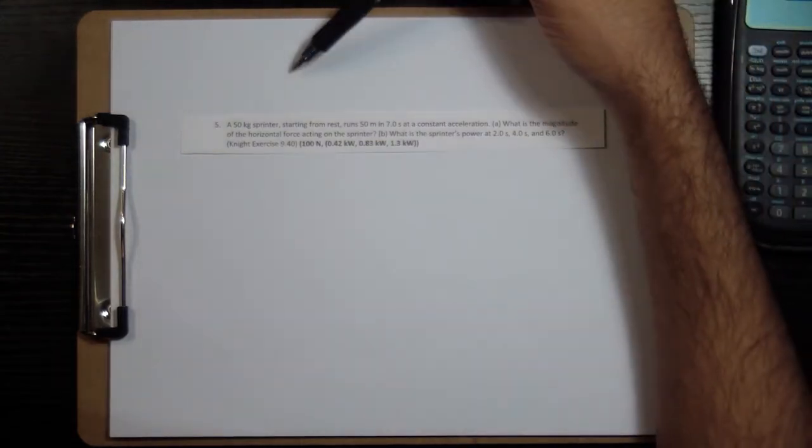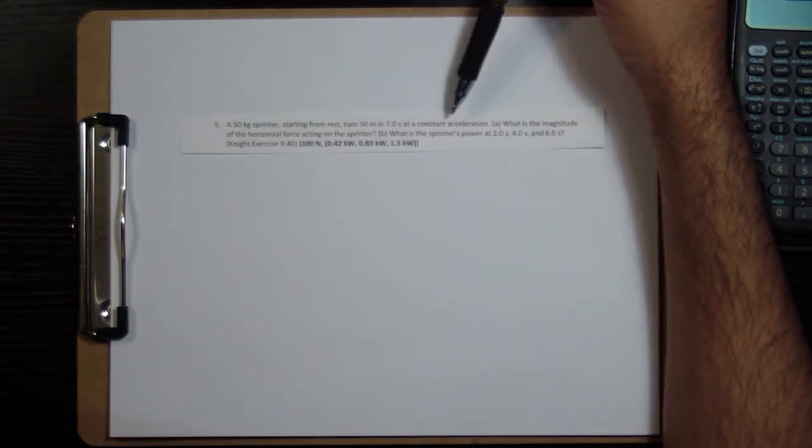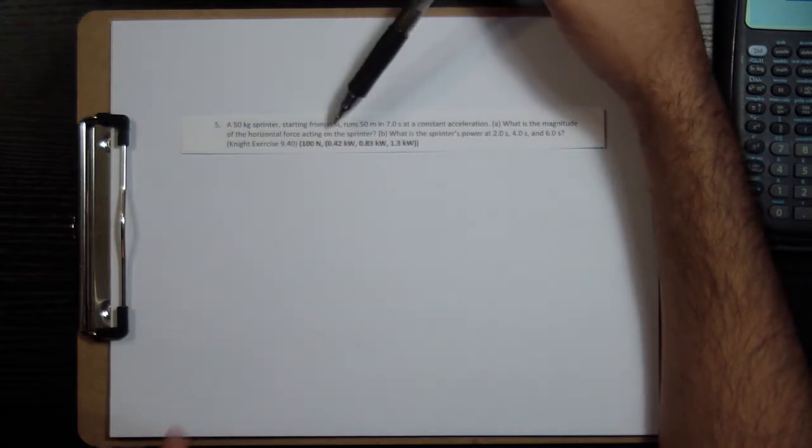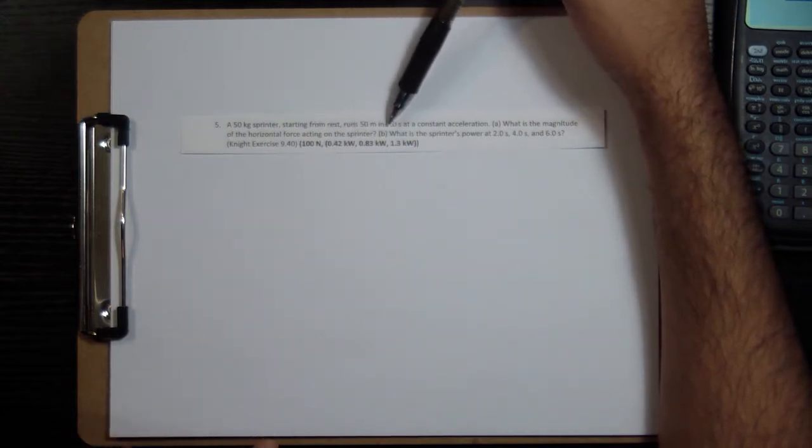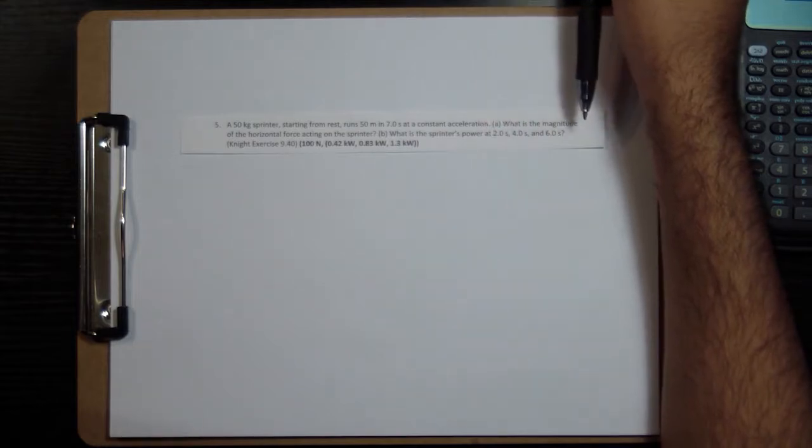All right, let's look at problem number five. I'll read it to you. A 50 kilogram sprinter starting from rest runs 50 meters in 7 seconds at a constant acceleration. A. What is the magnitude of the horizontal force acting on the sprinter? And B. What is the sprinter's power at 2, 4, and 6 seconds?